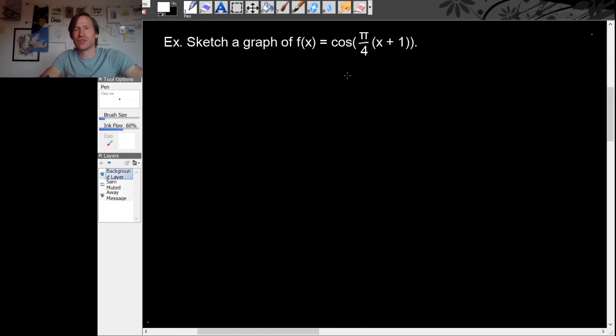So let's sketch a graph of this function cosine pi over 4 times x plus 1. We'll do it the right way once and then we'll do it the wrong way so that you can see the mistake that people sometimes make.